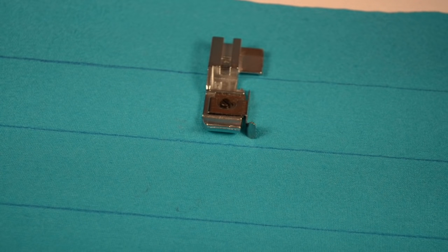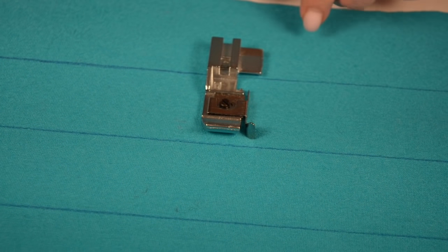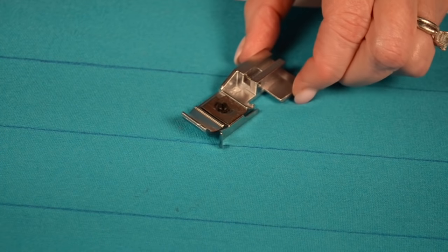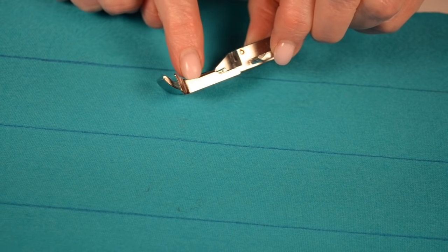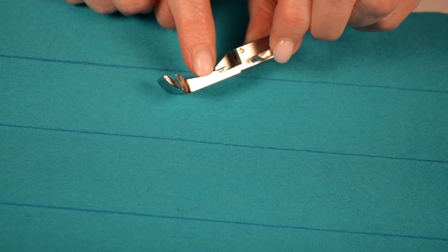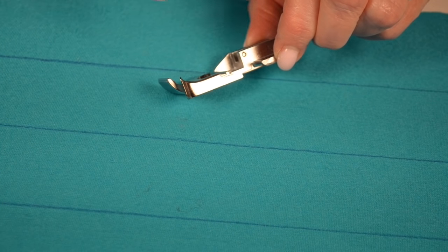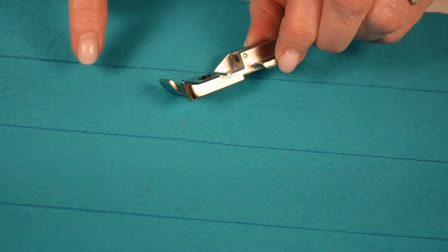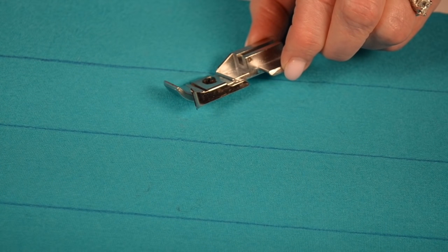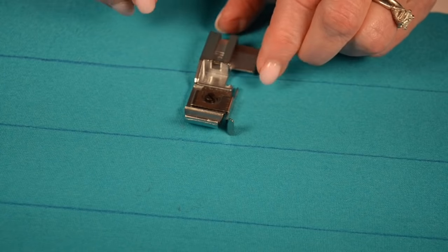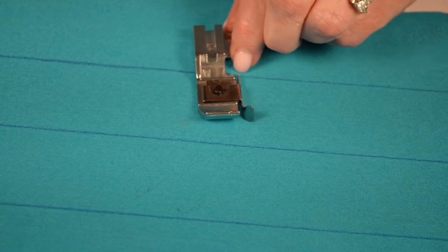There are lots of different ways that you can use a blind hem foot and the reason it's so great for the pin tucks is because this little guide on the side is going to slide along exactly where I want the pin tuck to be and it's going to protect the fabric from the cutting blade so I don't have to worry about nicking into that at all. Very easy to use.